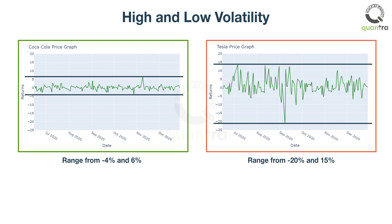Investors, such as pension funds, who prefer low volatility, would prefer Coca-Cola over Tesla. In this way, volatility plays a role in investing and trading decisions.